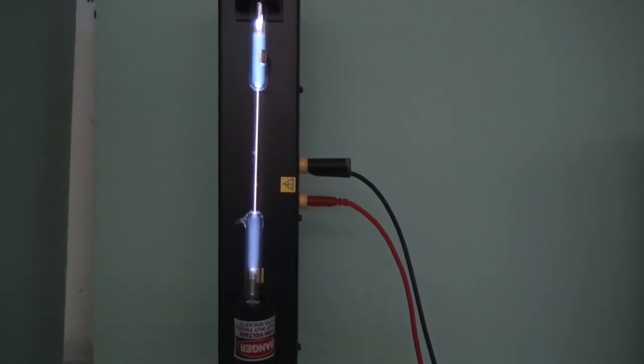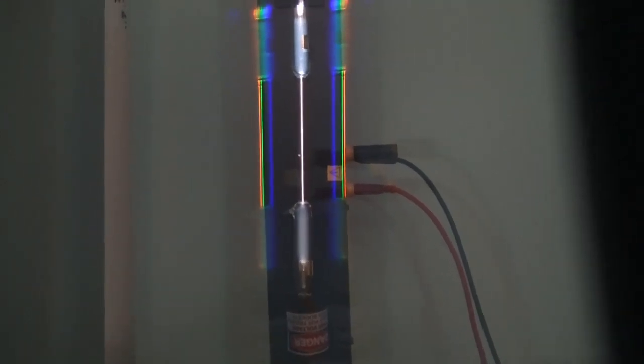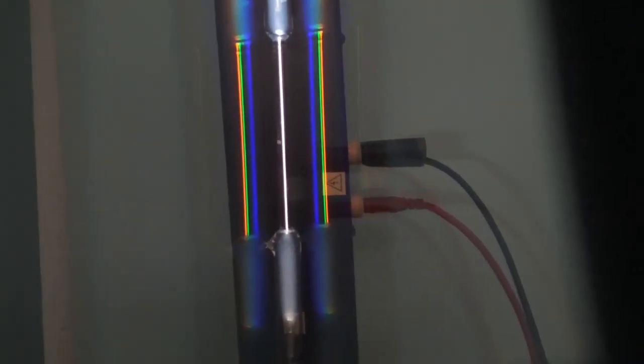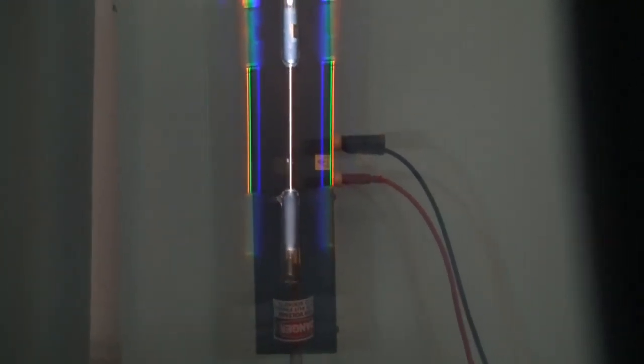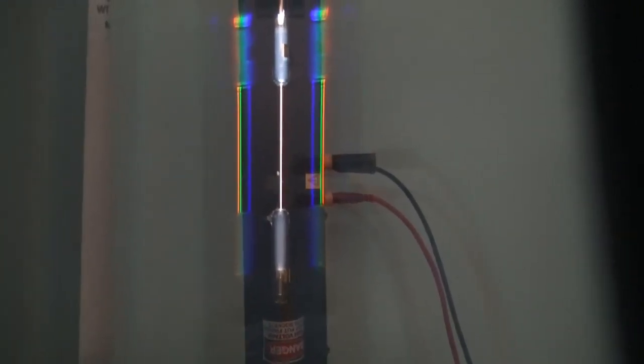Let's add a diffraction grid in front of the camera and look carefully. What do we see? This has 140 lines per millimeter.